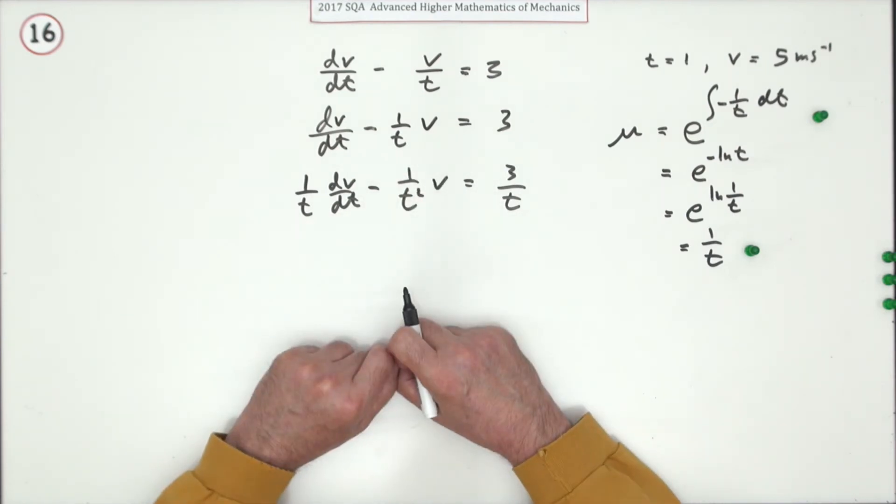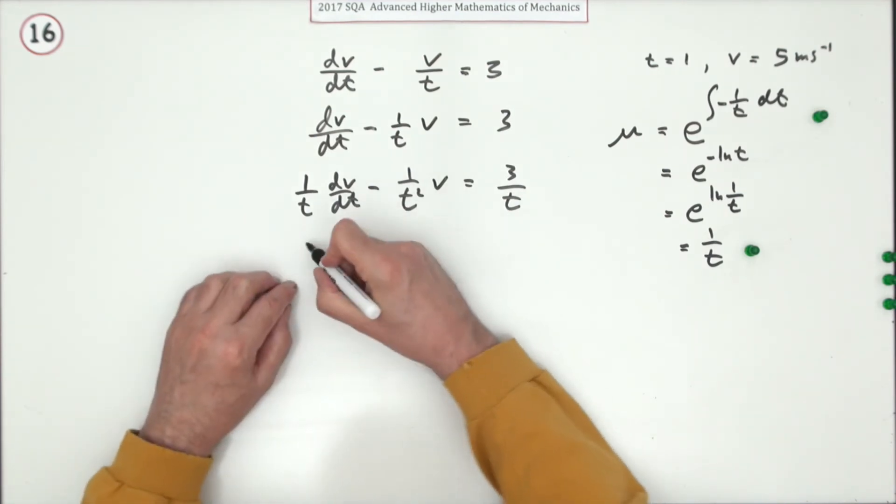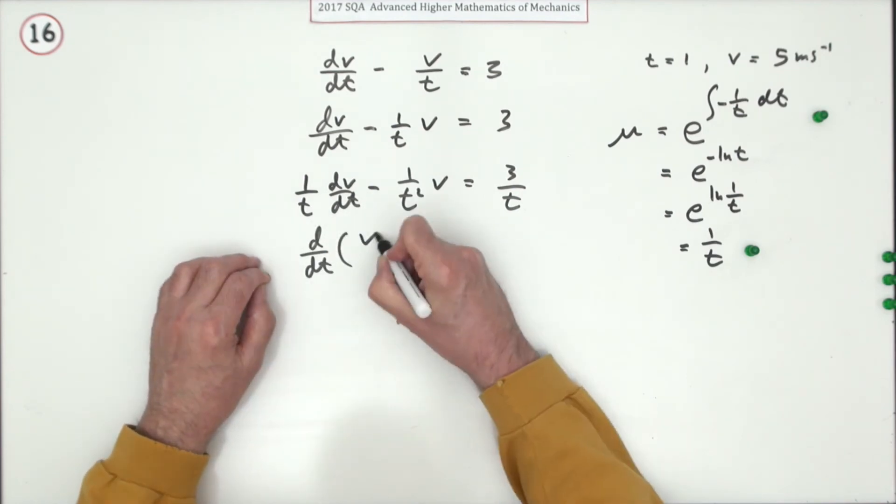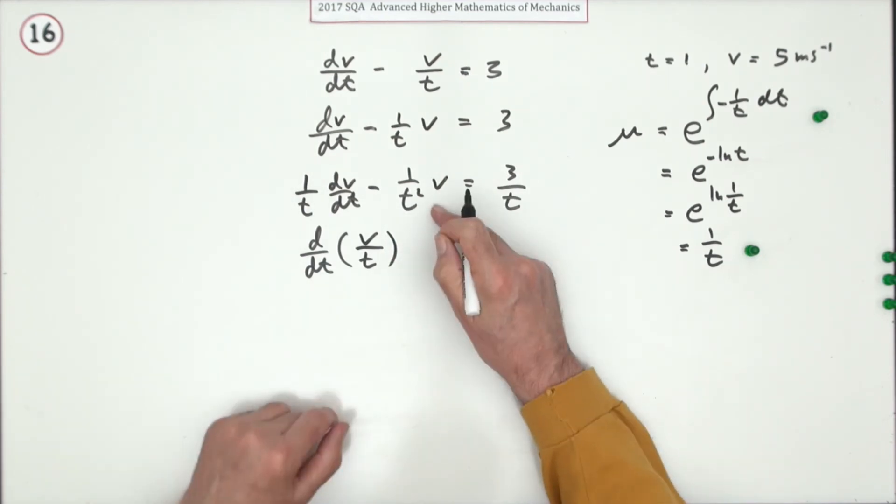So you know now when you integrate this up, when you put this back again, that's just going to be d/dt of effectively v/t, because it's 1/t times v.